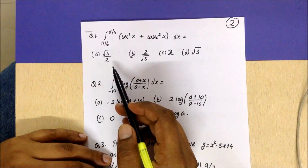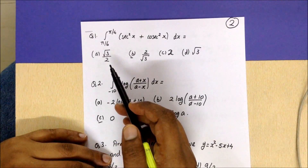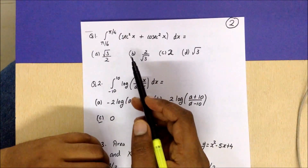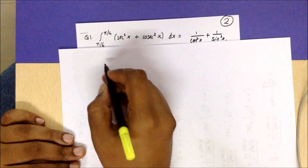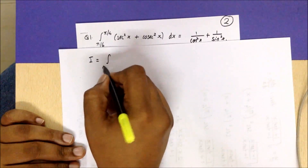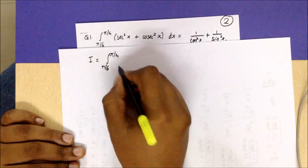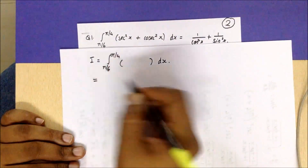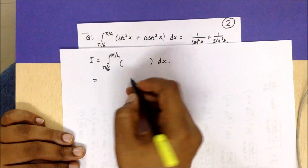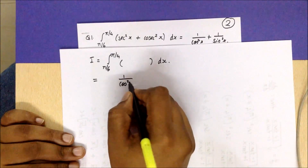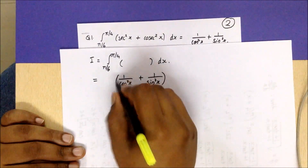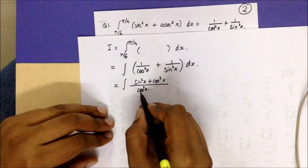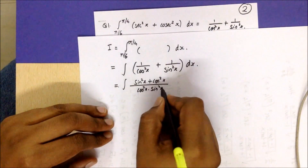Our first question is dependent on definite integration. We have not done this particular chapter, so we will be covering most of the topic through these video lectures. Let us go through how we can solve this particular integral. Let this be I — the integral part. We have sec²x, let us write it as 1/cos²x, and cosec can be written as 1/sin²x. So we will be getting cos²x·sin²x dx.